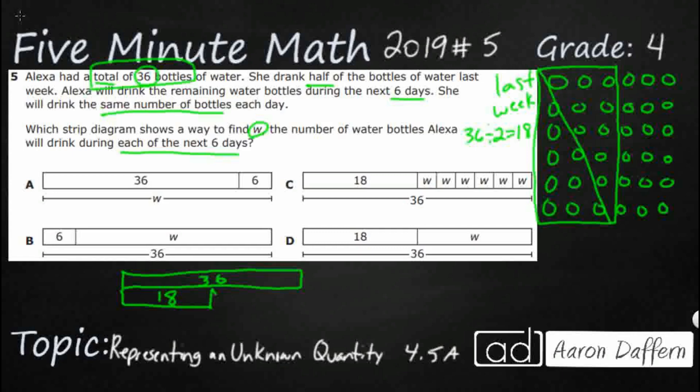Now it's this second part right here that's going to be kind of confusing. Alexa is going to drink the remaining water bottles. We already know that half of 36 is 18. So this over here is also 18. I've got two sets of 18. So this other set of 18, she's going to drink them during the next six days, but she's going to drink the same number of bottles each day. So this means equal groups. It's not like she's going to drink 10 and then 2 and then 3. She's going to drink the same number each of the six days.